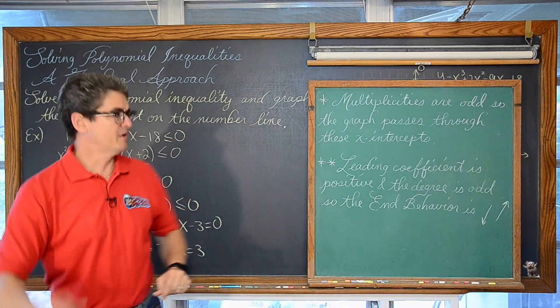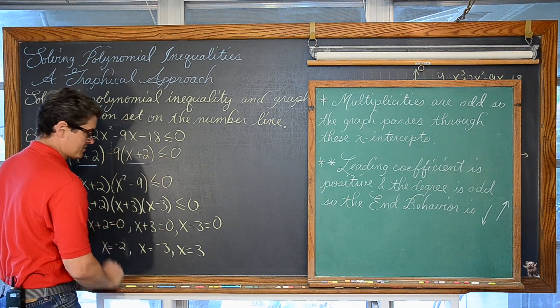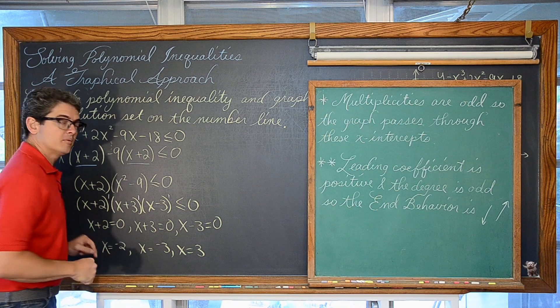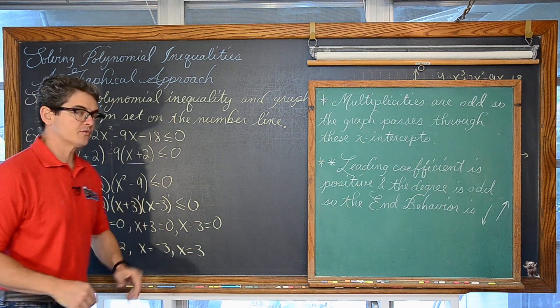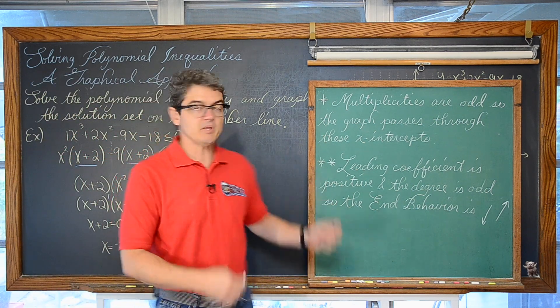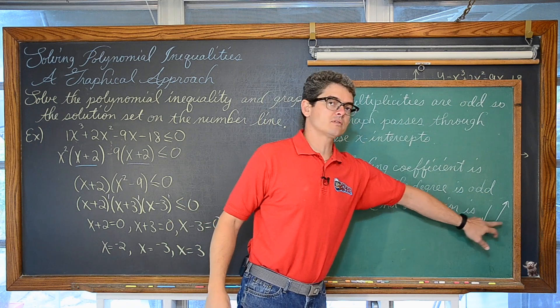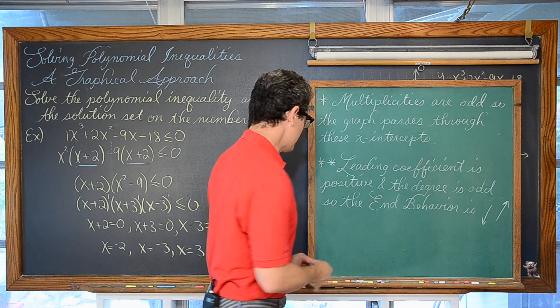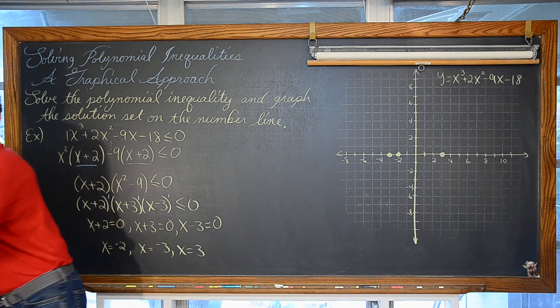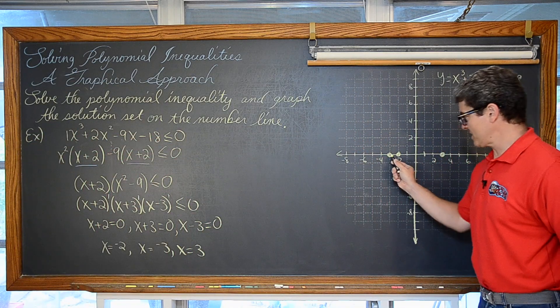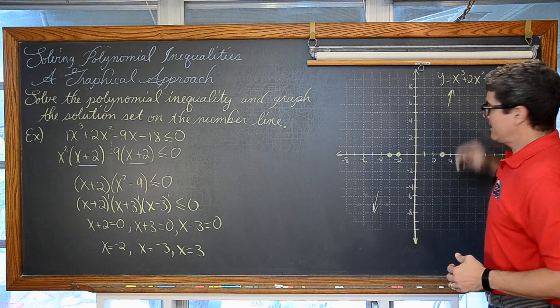The multiplicities of these solutions, these three solutions came from these three factors. And each of these three factors only showed up once. Which means their multiplicity is odd. So these x intercepts of negative 3, negative 2, and 3, the graph is going through those x intercepts. And because our leading coefficient is positive with an odd degree that combination is going to give us end behavior of down to the left and up to the right. So just with that little bit of knowledge we can visualize this graph. If we have those x intercepts of negative 3, negative 2, and positive 3, we know the graph has an end behavior of down to the left and up to the right. And the graph is passing through these x intercepts.